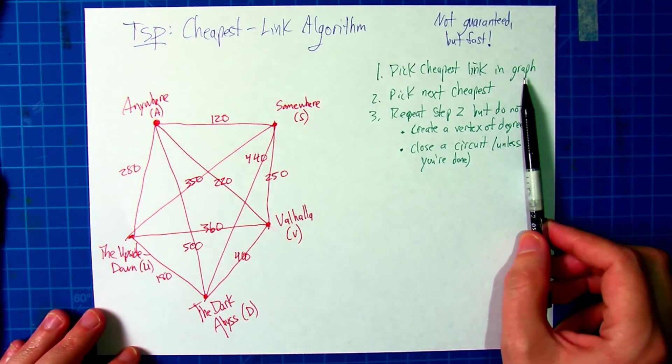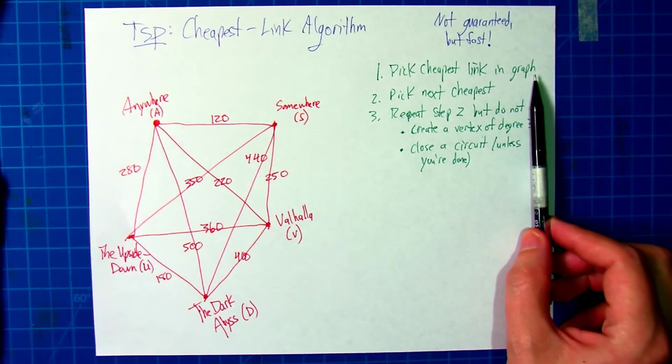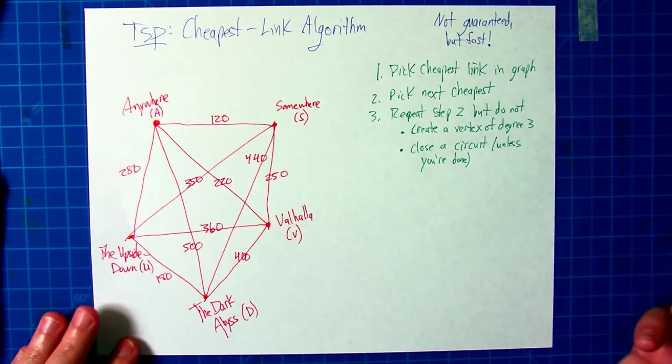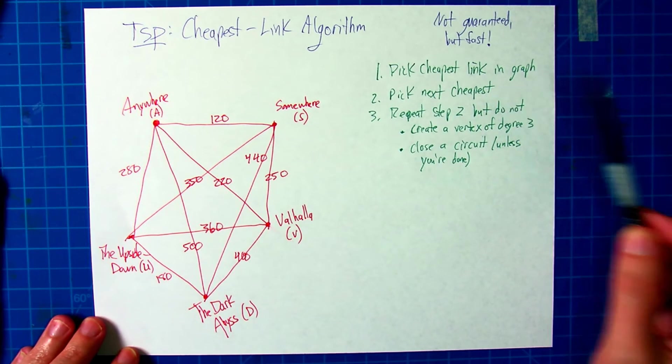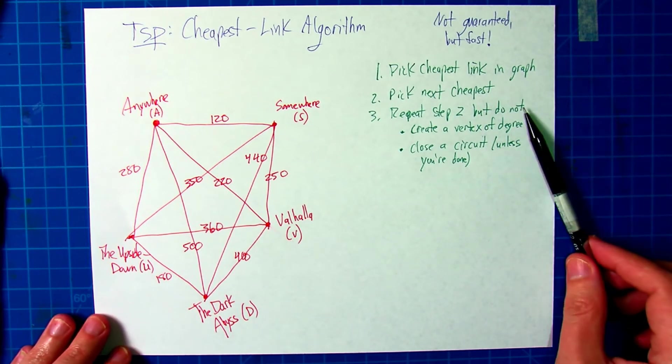The way it works is you're just going to pick the cheapest link in the graph to start, no matter where you're starting at, just pick the cheapest one, then repeat the next cheapest one, and keep doing that, but keep a couple things in mind.